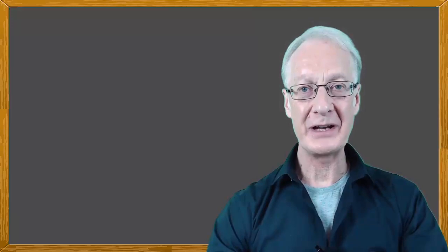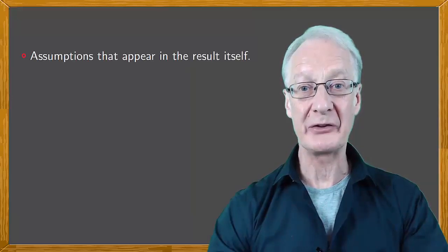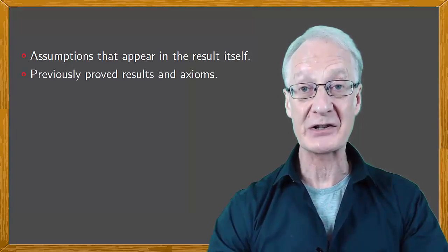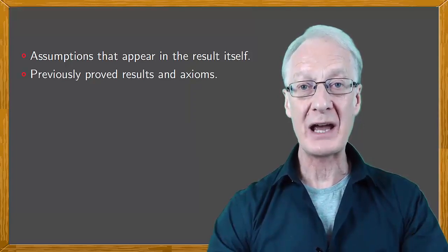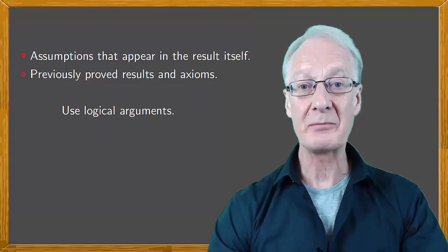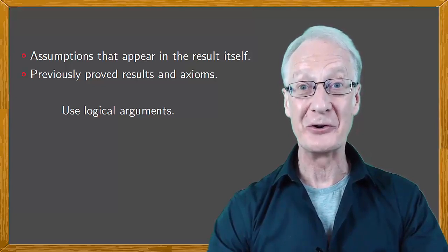The aim of a proof is to show the indisputable truth of a mathematical result. It may be based on assumptions that appear in the result itself, as well as previously proved results and axioms. At all times, we have to use logical arguments. The great thing about a mathematical result that's been proved is that it remains true for all time.